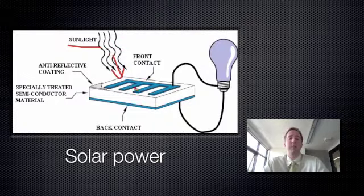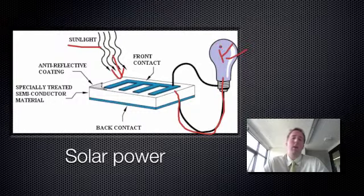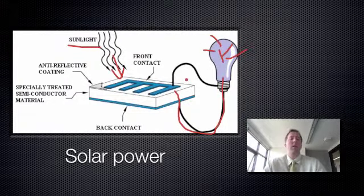Light hits this photoelectric material, it generates electricity or electrons. Those electrons flow down these wires and they turn on a light globe. So that's really quickly how solar power works.